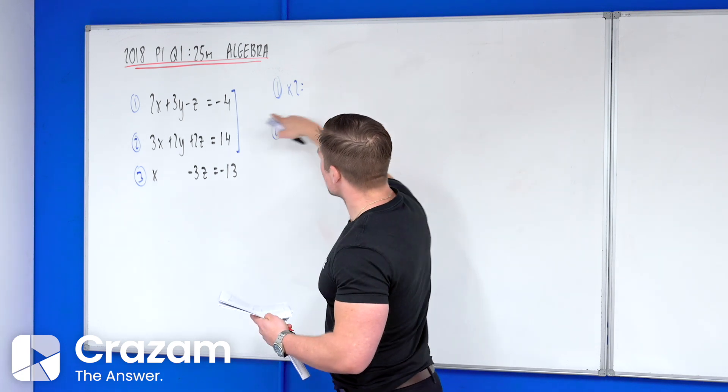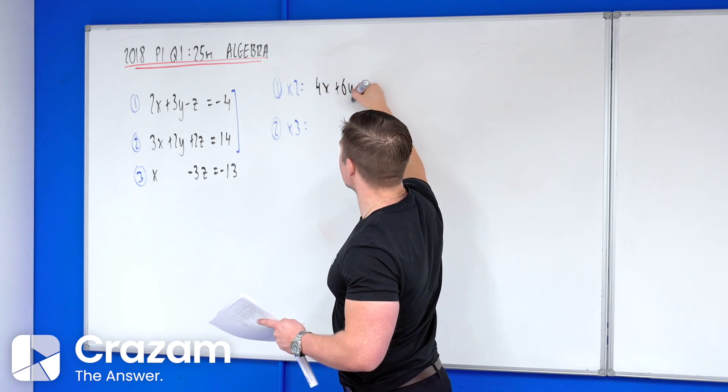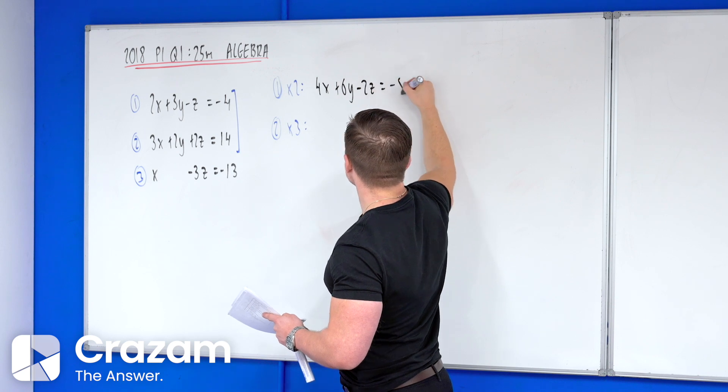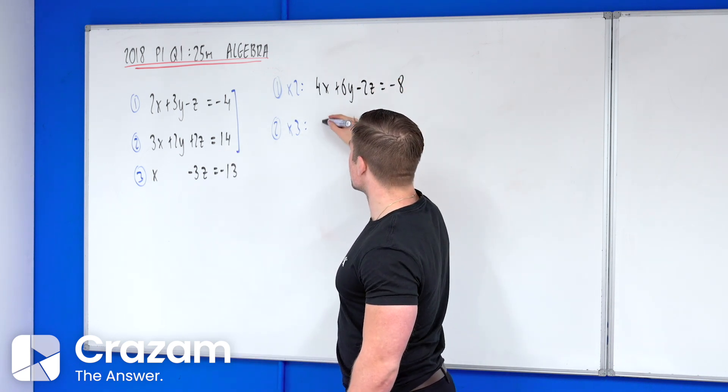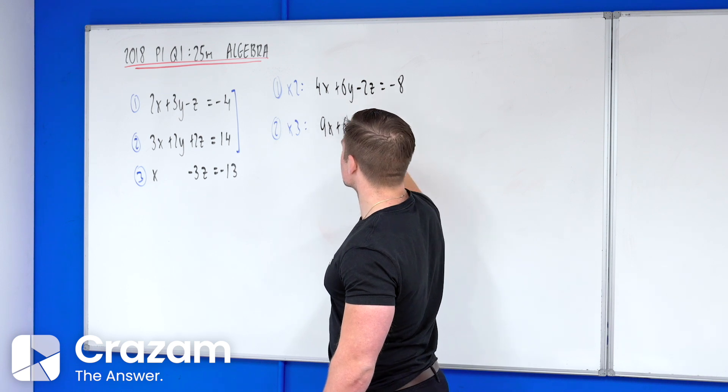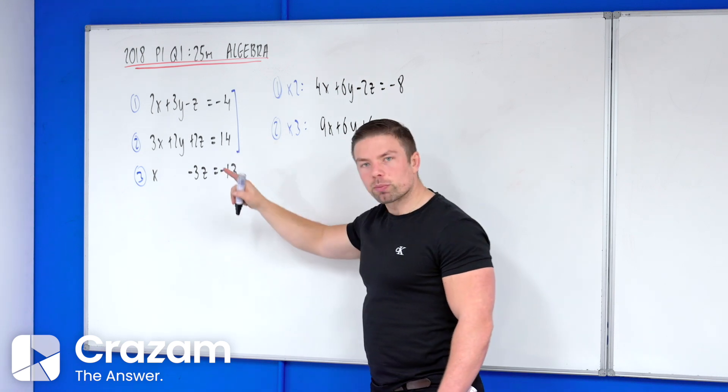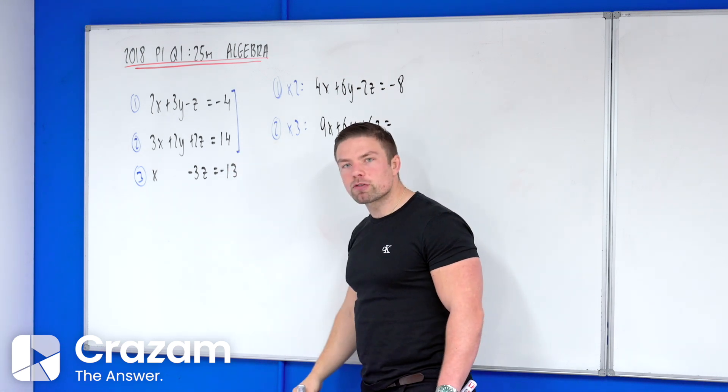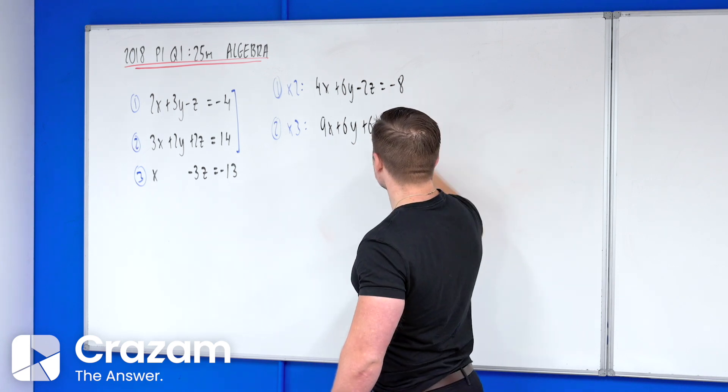So multiplying equation one by two gives me 4x plus 6y minus 2z equals minus eight. And if we multiply equation two by three, that's 9x plus 6y plus 6z equals to, don't be afraid to use your calculator, three by fourteen gives us forty two.